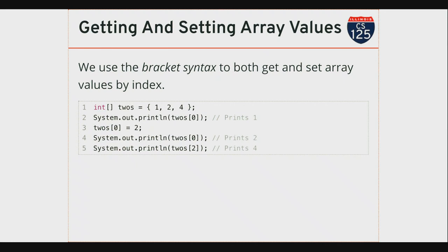In Java I do this using something called bracket notation — square brackets. On line one I've created an integer array called 'twos' and initialized it with three values, so this has size three. This piece of syntax retrieves the value at index zero in the array. For those of you new to computer science, this is a little bit weird — index zero is the first element in the array. What is that going to print? The slides say it's going to print one. That's the first element.